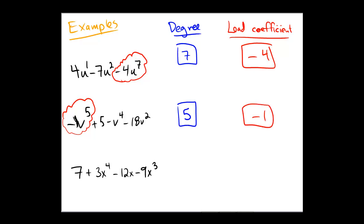Final example. In case you haven't already tried it, pause and try on your own: seven plus 3x to the fourth minus 12x minus 9x cubed.